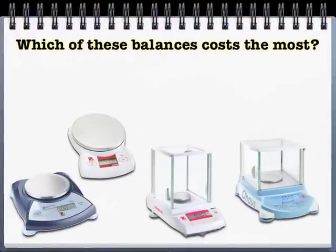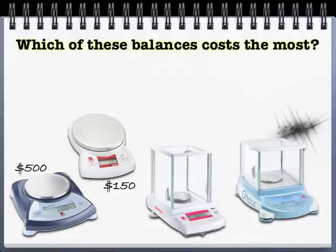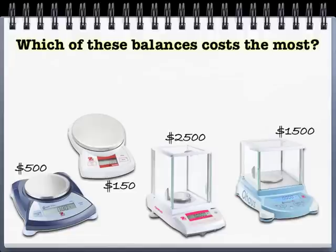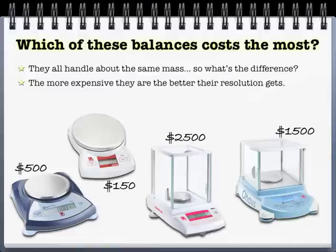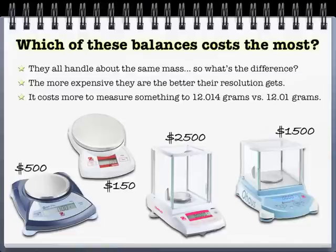I have four balances here, and you might be surprised that even though they all can handle about the same mass, they have vastly different prices ranging from $150 all the way up to over $2,000. If you notice, really the only difference between them is the fact that the more expensive balances have higher resolution. They go to more places past the decimal. So you are going to pay more to get a more precise measurement, to have instrumentation with higher resolution.